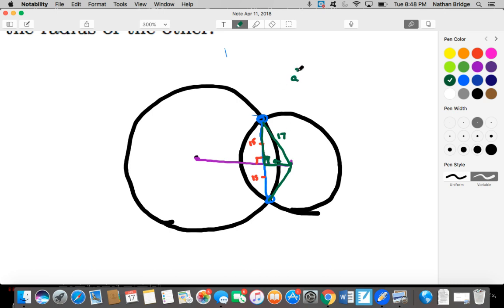So we know we can set up, in order to find this little missing side A right here, we can set up a Pythagorean equation. And we know this is a Pythagorean triple, so we know A is equal to 8.